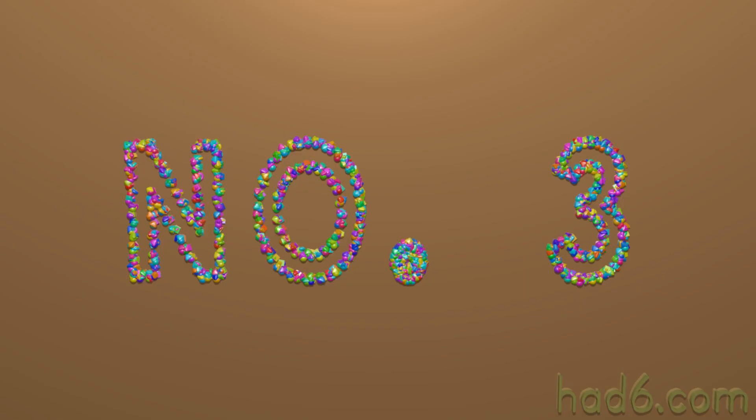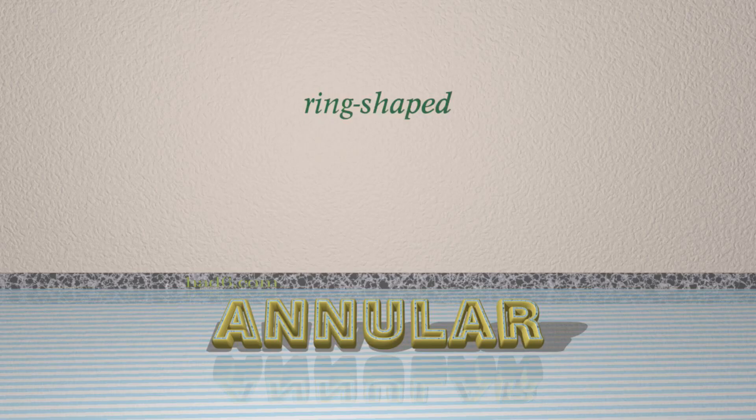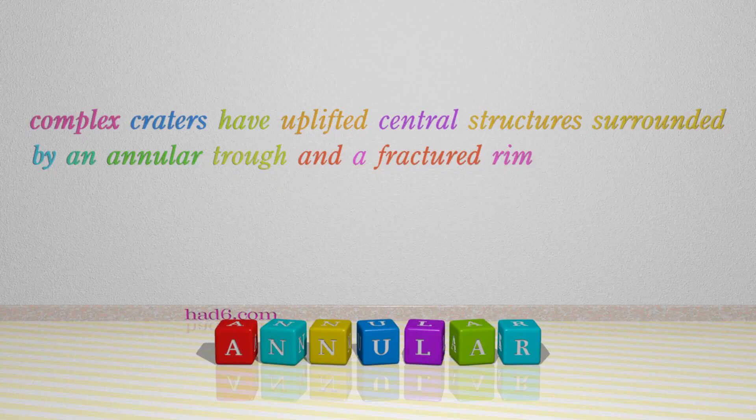Number 3: Annular, which means ring-shaped. For example: Complex craters have uplifted central structures surrounded by an annular trough and a fractured rim.